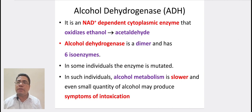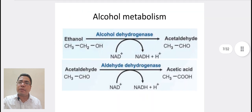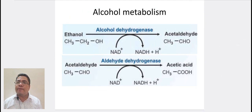Coming to alcohol dehydrogenase. It is an NAD+ dependent cytoplasmic enzyme that oxidizes ethanol to acetaldehyde. Alcohol dehydrogenase is a dimer and has 6 isoenzymes. In some individuals the enzyme is mutated; in such individuals, alcohol metabolism is altered and even a small quantity of alcohol may produce symptoms of alcohol intoxication. In this diagram, ethanol is converted into acetaldehyde with the help of alcohol dehydrogenase and the conversion of NAD+ to NADH. Then acetaldehyde is converted to acetic acid by aldehyde dehydrogenase with the conversion of NAD+ to NADH.